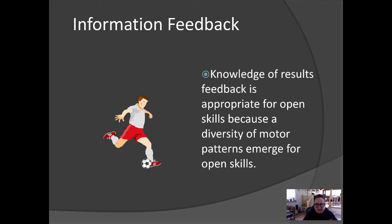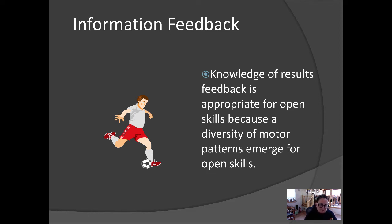Another type of information feedback is knowledge of results. Knowledge of results feedback is appropriate for open skills because in open skills there's a diversity of movement patterns that emerge. It wouldn't necessarily be appropriate to provide knowledge of performance feedback because of this diversity. So I might focus feedback on other parameters — for example, how fast is the ball moving, or have you noticed the spin or change-up related to this pitcher's dynamics?